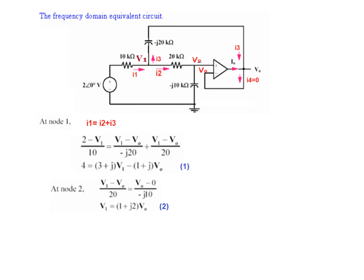Now, the second equation at node 2. The current entering here is current leaving. And I2 is V1 minus V0 divided by 20k. And this is V0 minus 0 divided by minus j10. Simplifying, we get equation number 2. And following these two equations, we can find V0. And in terms of time domain, the V0 will be 0.667 cos omega t cos 5000t minus 90.